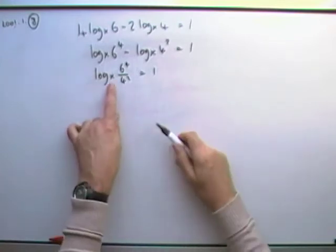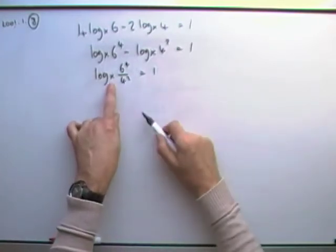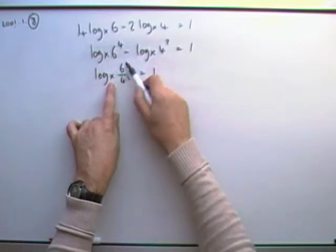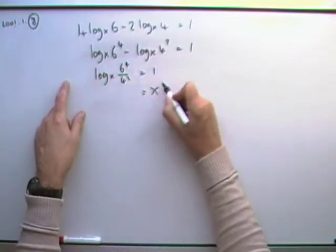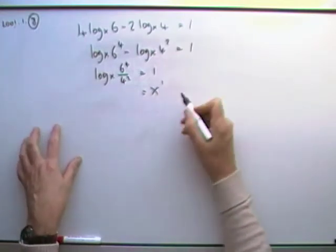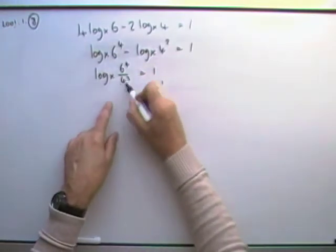And then, you can either think, what power of this gives 1? Well, if that's power 1, then that must be the number. Or, get rid of log x by taking it across and making it x to the power, and x to the power 1 is just x. So x will be just whatever this thing comes to.